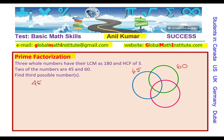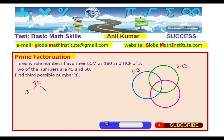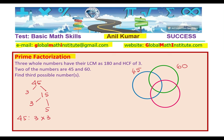45 prime factors will be 3. 3 will go how many times? 3 goes 15 times and then 3 times 5. So 45 can be written as product of 3 times 3 times 5.